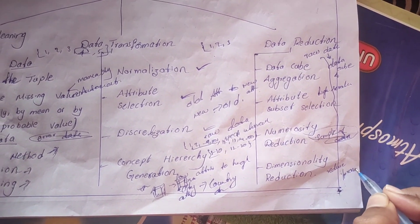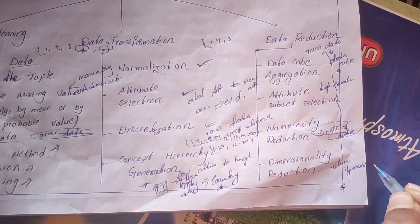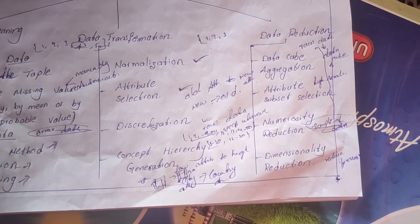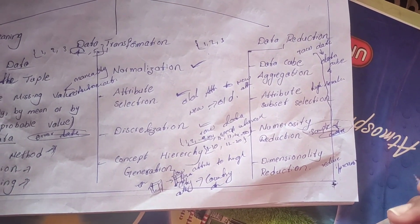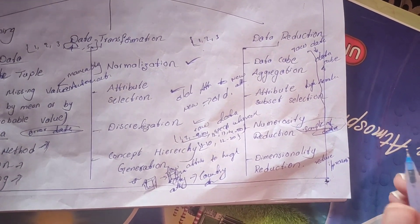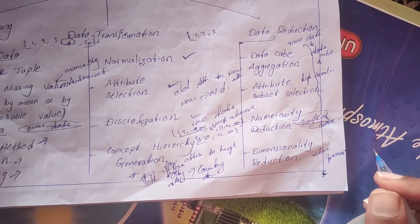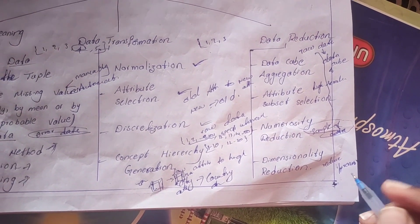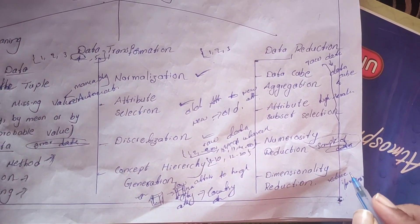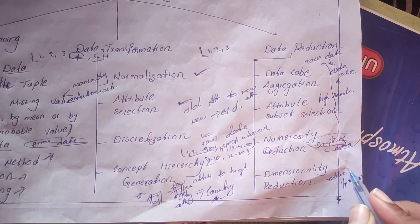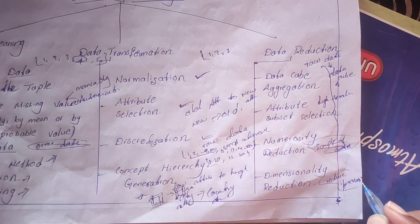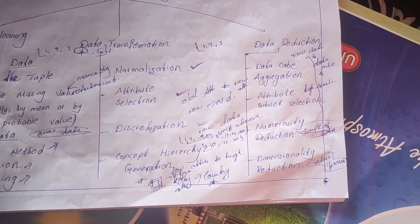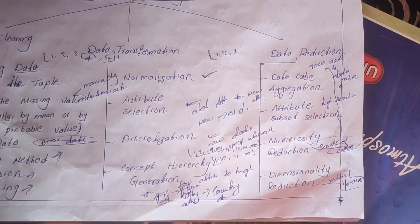In dimensionality reduction, we reduce input variables. A large number of input variables leads to poor performance, so by reducing input variables the performance becomes higher.